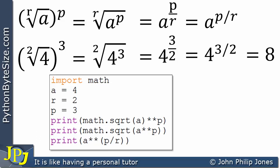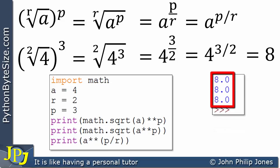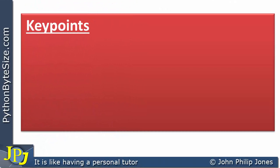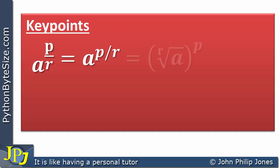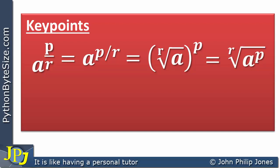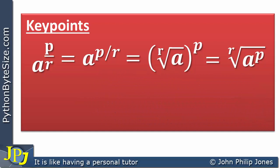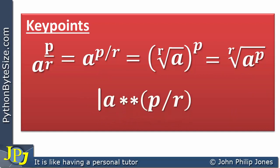The runtime confirms that in all three cases we get 8 — as a float, but 8 nonetheless. For the key points: a raised to the power p divided by r can be computed by taking the root first and then the power, or the power first and then the root. In Python, this is represented simply as a ** (p / r), using brackets to ensure p divided by r is evaluated first.